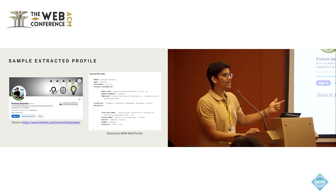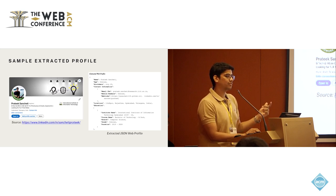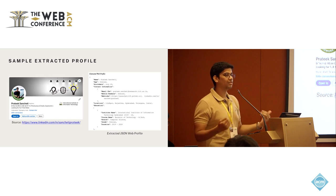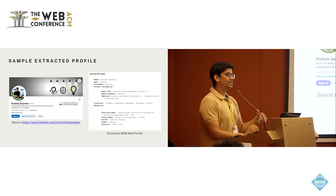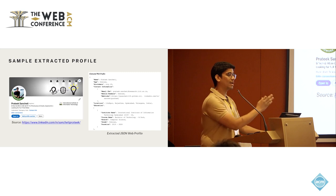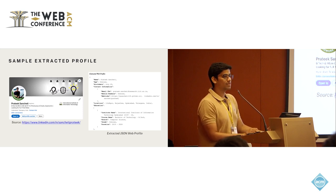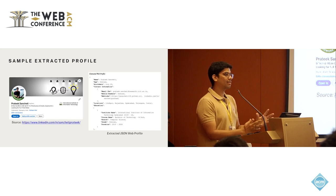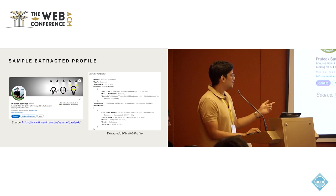One important thing we do is standardize the extracted entities using Wikipedia, to handle the diverse representations of entities. For example, under the education tag you can see 'International Institute of Information Technology.' I don't always refer to my institute in full form — I might use IIIT Hyderabad or IIIT H. Sending these keywords to Google with a proper query, such as 'IIIT H Institute Wikipedia,' gives a URL corresponding to that particular institute. We standardize major entities — organization names, course names — using this method, so we don't have to depend on ML models to compare and identify similarity between two text pieces.